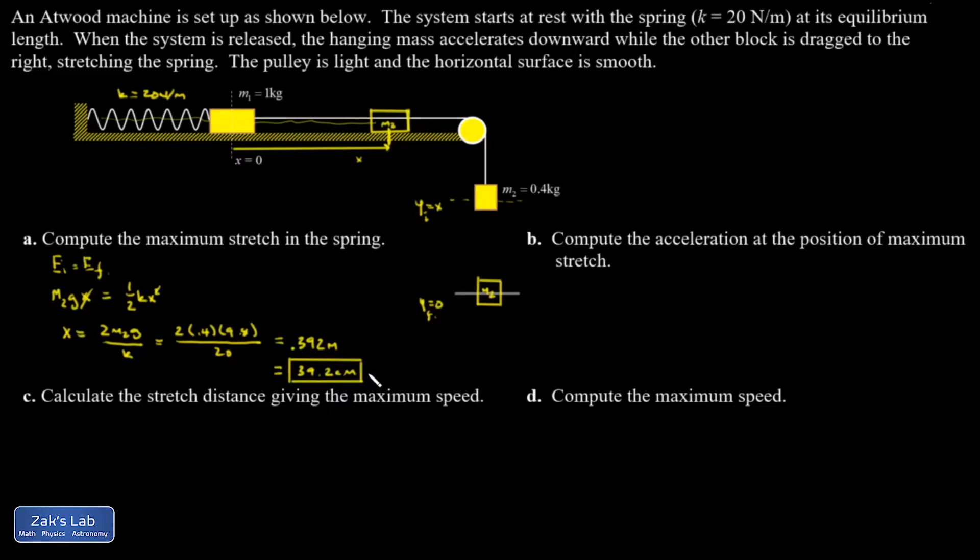In part b, I'm asked for the acceleration of the masses at the position of maximum stretch. So we're going to have to actually get into a force analysis on this. I'm going to look at m2 first. And I have gravity pulling down on it with a strength of m2g. There's an unknown tension in the string. And that's going to be pulling up on m2. Then if I go up and look at m1, the tension is pulling to the right on that mass. Sorry, I had that mistakenly labeled as m2 a second ago. So it's m1, just to make it clear.